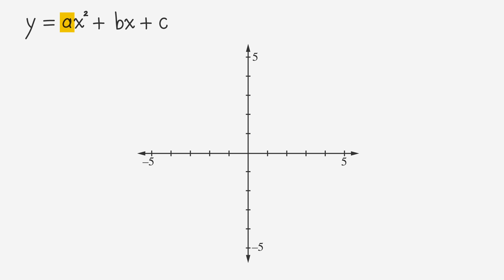And in the equation y equals negative x squared, the coefficient of x squared is negative 1. Because a is negative, the parabola opens downward.